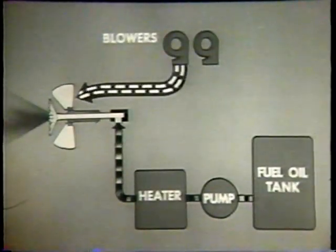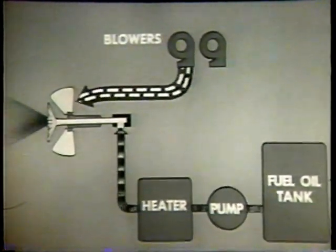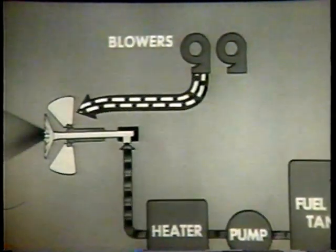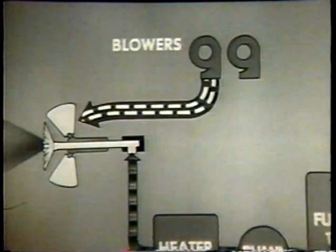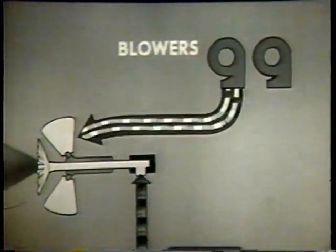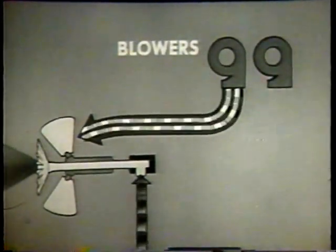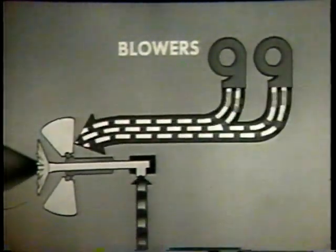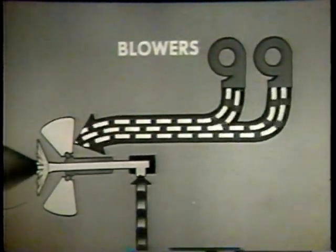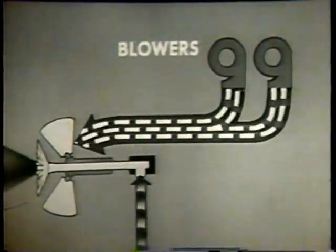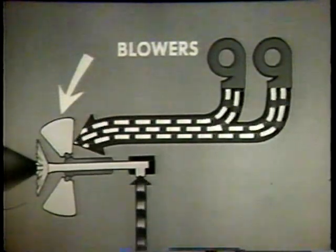Controlling the force draft blowers is the principal method of controlling the quantity of air reaching the burner. For example, to increase the air a moderate amount, you increase the speed of the blower in service. Or, if even more air is needed, you cut in another blower. You can make minor adjustments in the air supply with the air doors.